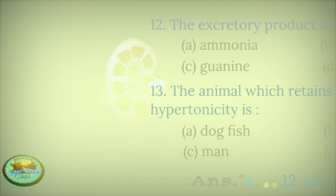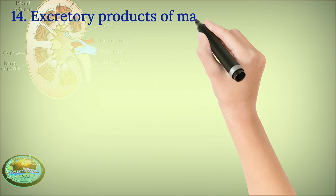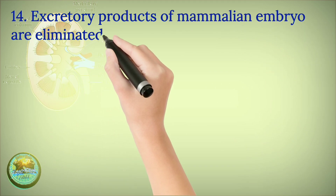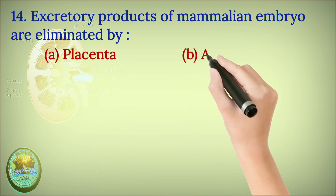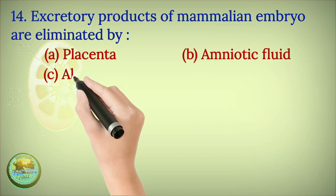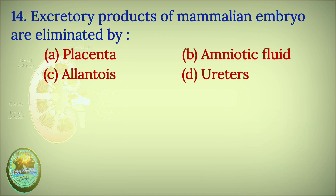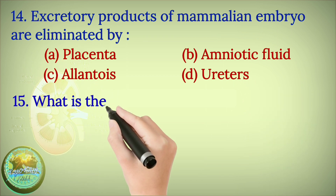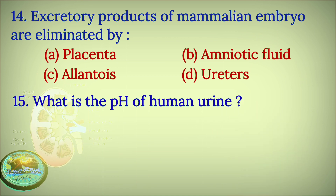Question 14: The excretory products of a mammalian embryo are eliminated by — placenta, amniotic fluid, allantois, or ureters?